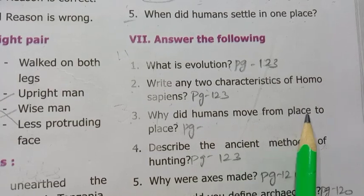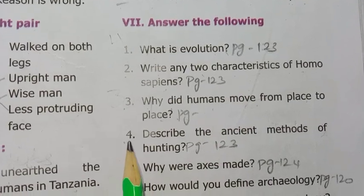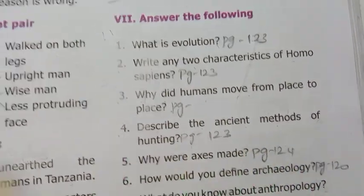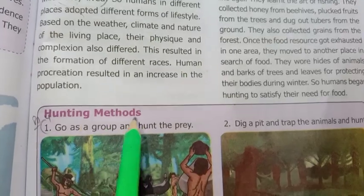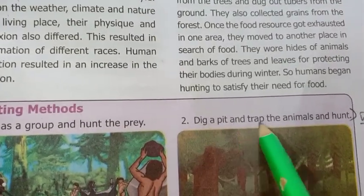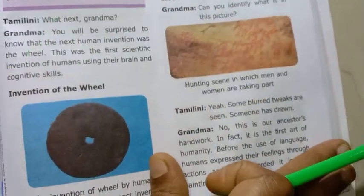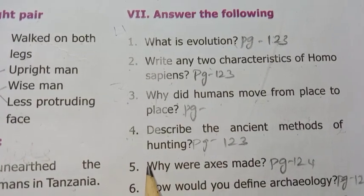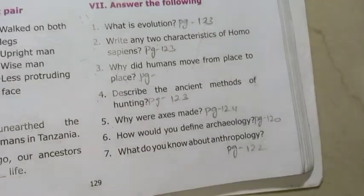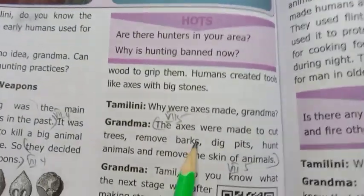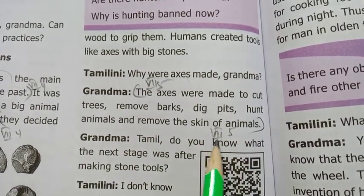Third one: why did humans move from place to place? Fourth one: describe the ancient methods of hunting. Hunting methods — go as a group and hunt the prey; dig a pit and trap the animals and hunt. Fifth one: why were axes made? The axes were made to cut trees, remove barks, dig pits, hunt animals, and remove the skin of animals.